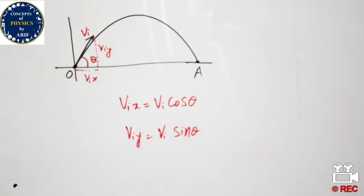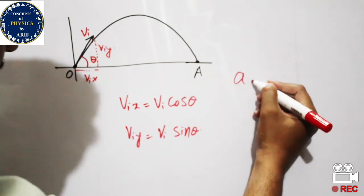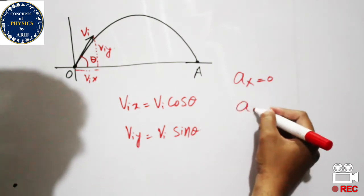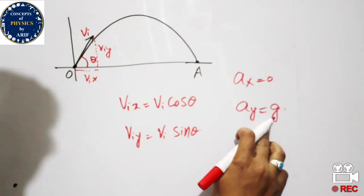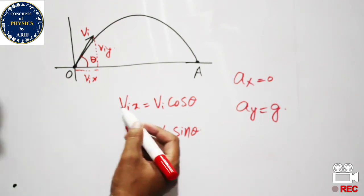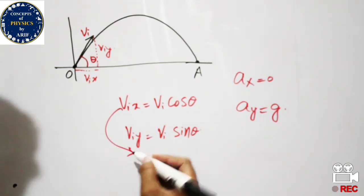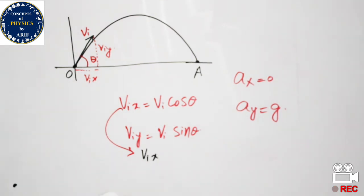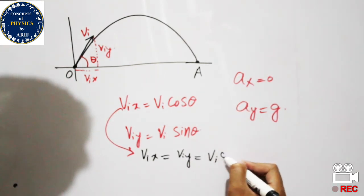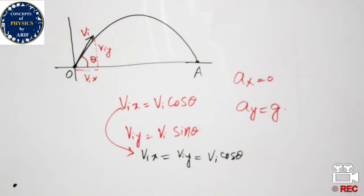In this case, the horizontal acceleration Ax = 0, because only the vertical acceleration Ay = g is acting on the object. Gravitational pull acts vertically, and horizontal acceleration is zero. Therefore, the initial velocity along the x-axis remains Vix = Vi·cos(θ), since no gravitational pull is applied horizontally.